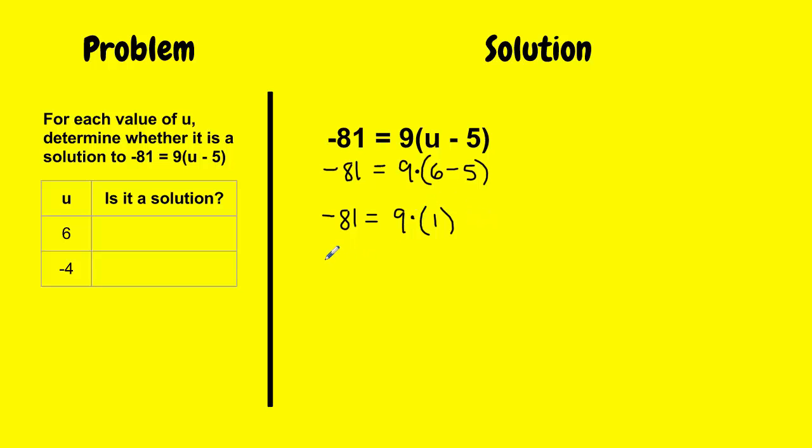And then in my next step, I just have to do simplification one more time. 9 times 1 is 9. And if I look at these two numbers, right now this equation says negative 81 is equal to 9. Well, I know those two numbers are not equal to each other. They're different. So that tells me that is a false statement.